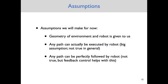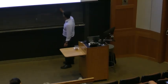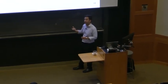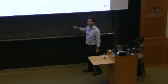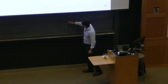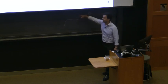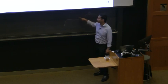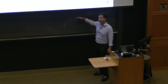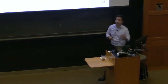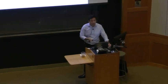Another student asked about 'perfectly following' the path. What I mean is: in terms of distance to the desired path, if there's some wind gust that blows your drone away from the target trajectory, we're going to ignore that possibility. We're assuming that somehow your drone will exactly follow the path the planning algorithm outputs.